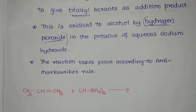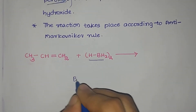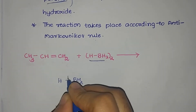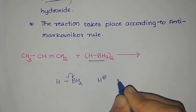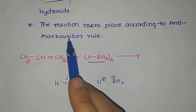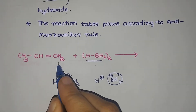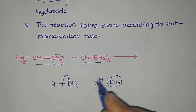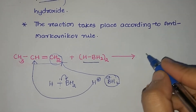So the reaction takes place according to anti-Markovnikov rule whenever the reaction is carried out in the presence of hydrogen peroxide. Let us look at the reaction. We have taken an alkene and the reagent BH3. The dissociation of BH3 is shown: the electron pair shifts, hydrogen is removed as H+ and BH2 is removed as BH2 minus. In anti-Markovnikov rule, the negative part of the attacking reagent forms a bond with the carbon atom having the greater number of hydrogen atoms.